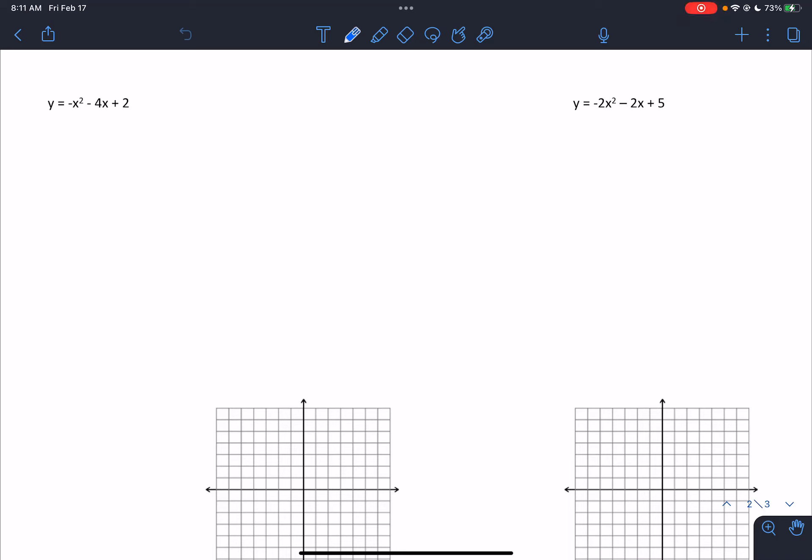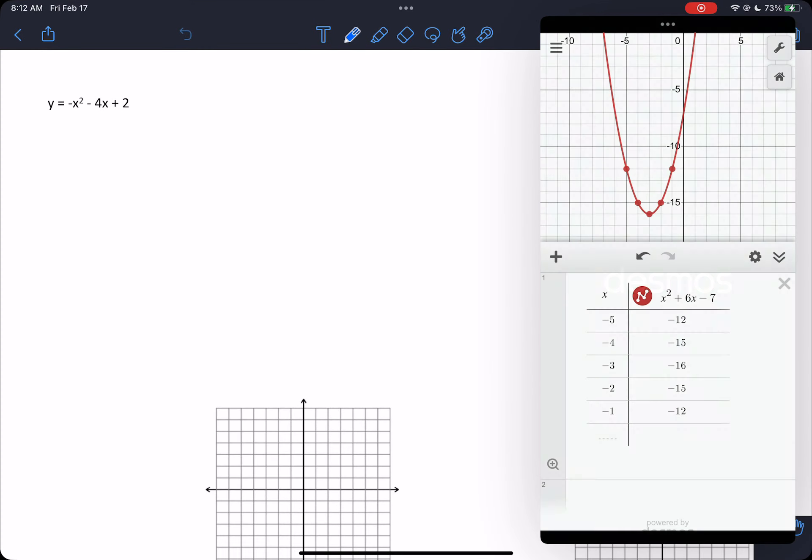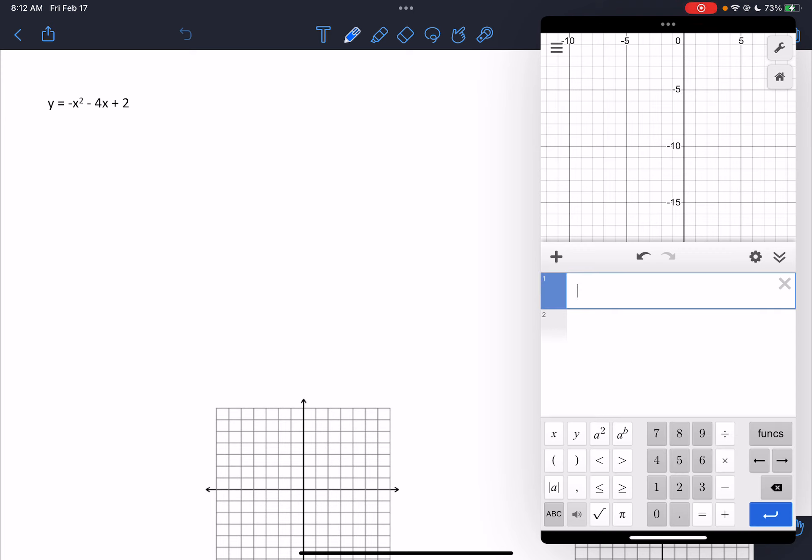Alright, so I'm going to do this last problem here, the notes, or the last one that I did in class, the top left problem. So with a problem like this, the first thing I'm going to do is graph it on Desmos. So when I type this in, I go y is equal to negative x squared minus 4x plus 2.